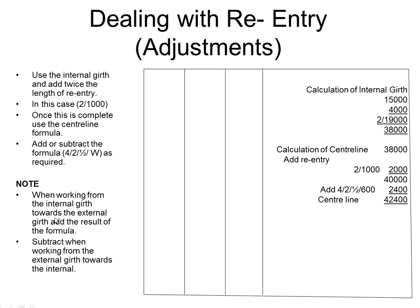When working with the internal girth and working towards the external girth, you add the result of the formula — so the internal girth plus four times two times a half times w. However, if we were working from the external girth towards the internal, we need to subtract this, because internal girths are always less than external girths.